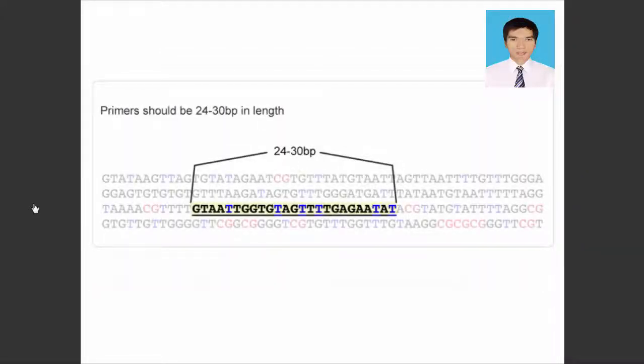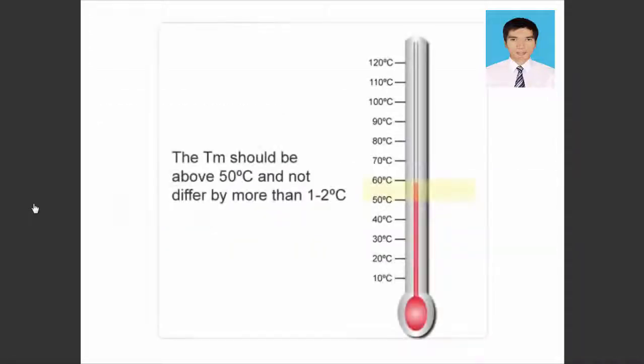Primers should be 24 to 30 base pairs in length to ensure specificity. Primers should have a similarly predicted Tm above 50 degrees Celsius and not differ by more than 1 to 2 degrees Celsius.